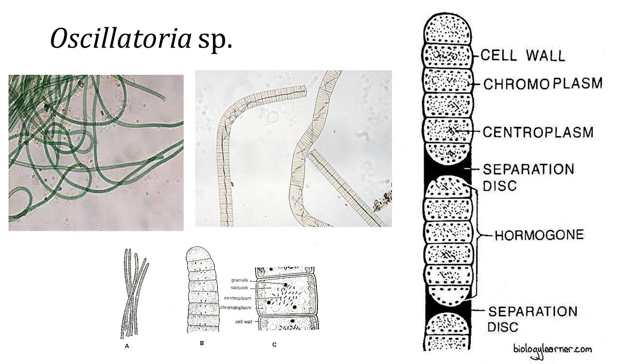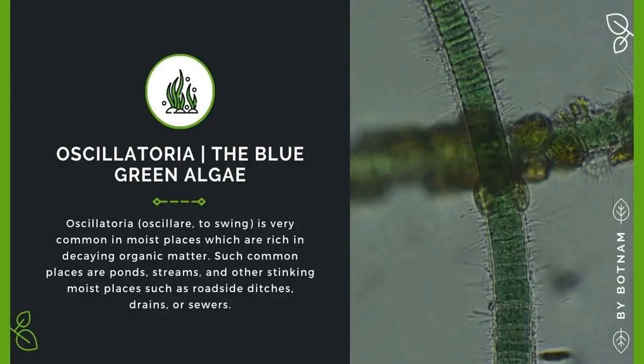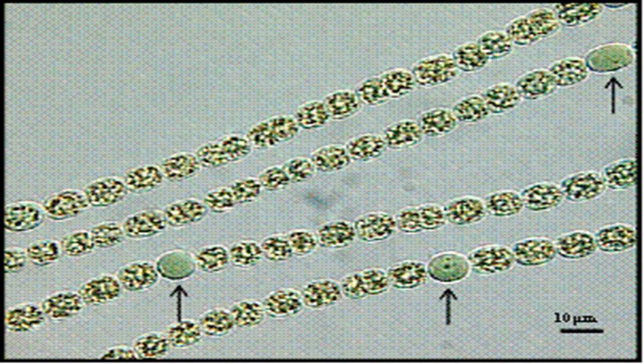The filament oscillates back and forth. In water columns, some cyanobacteria float by forming gas vesicles, as in archaea. These vesicles are not organelles as such — they are not bound by lipid membranes, but rather by a protein sheath.